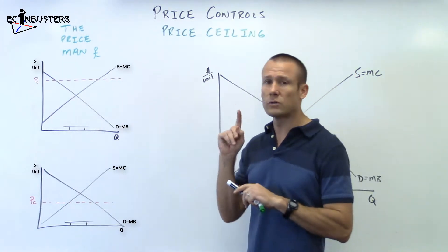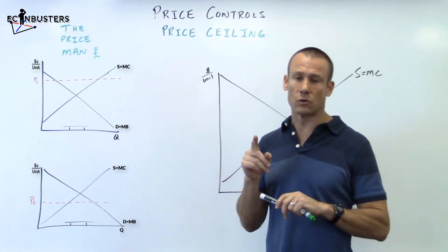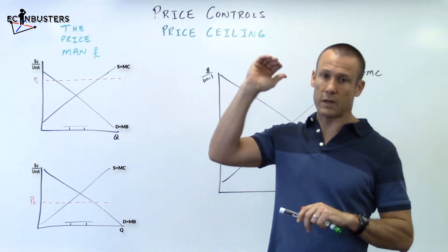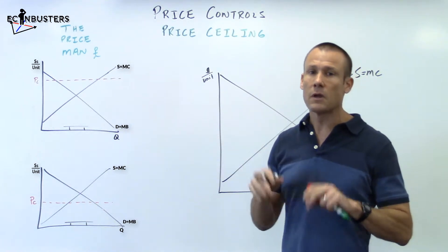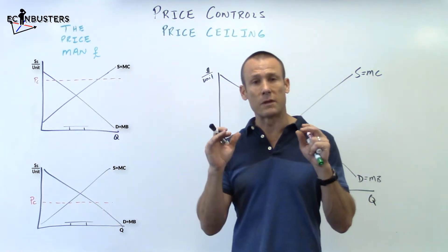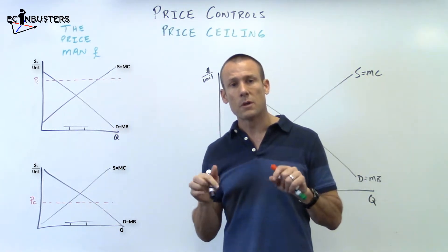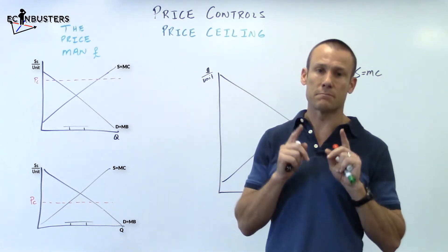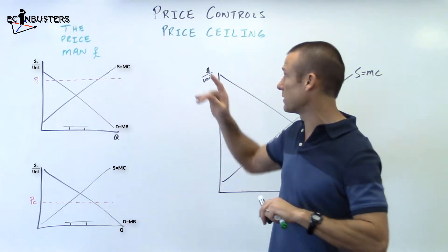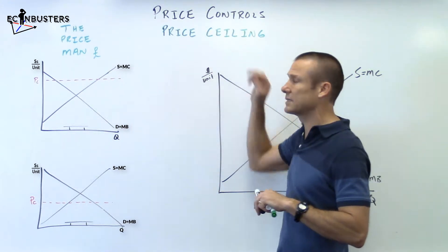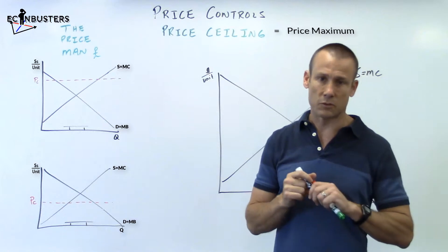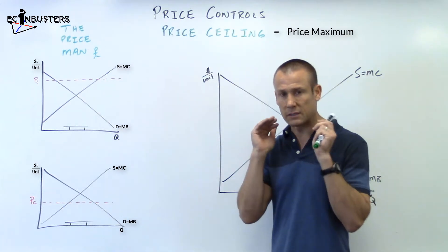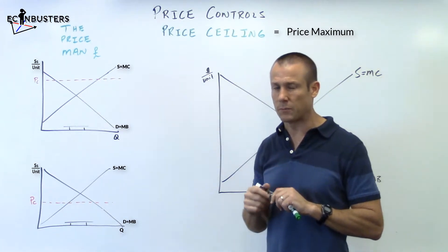There are two types of price controls. One is called a price floor and one is called a price ceiling. A price floor is a price minimum. A price ceiling is a price maximum. This video is about price ceilings — price maximums.